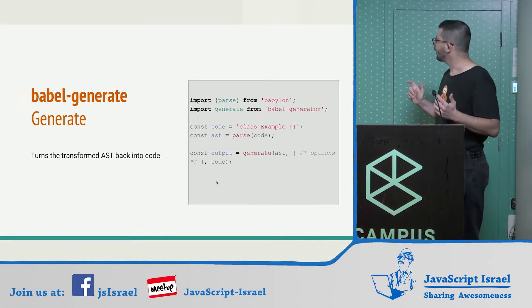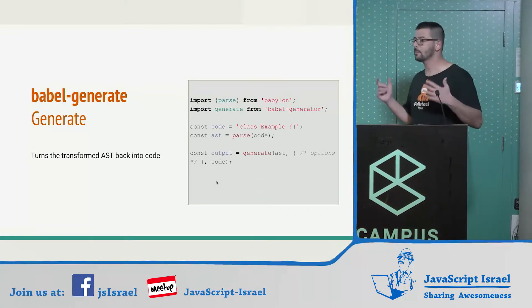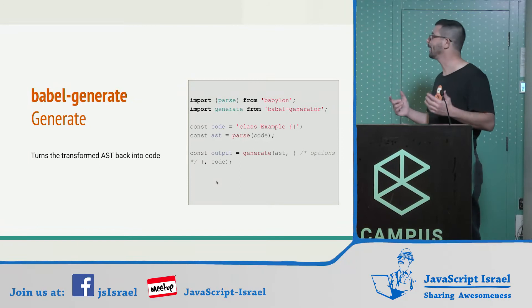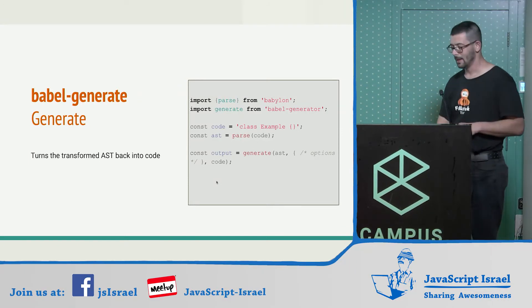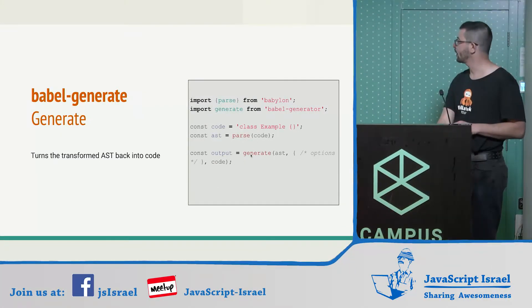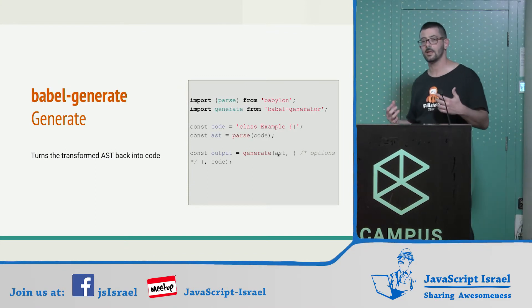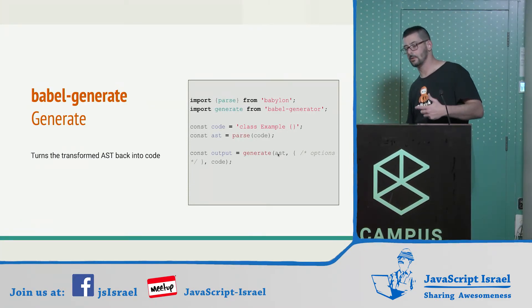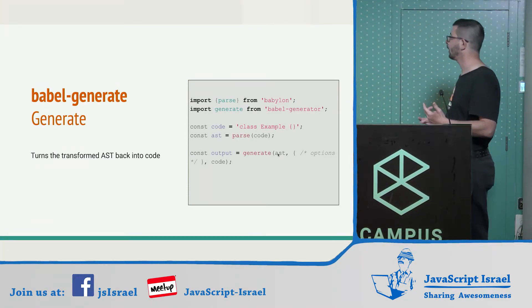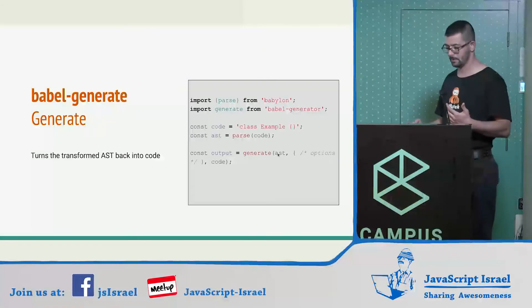The third tool is pretty straightforward — it's the generator. It accepts an AST, or abstract syntax tree, and generates our code back from it.